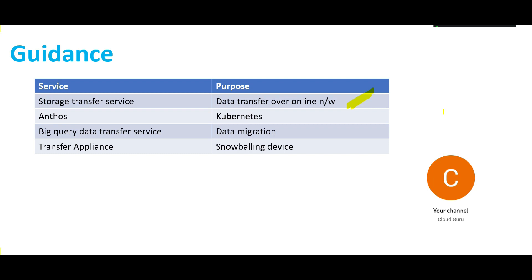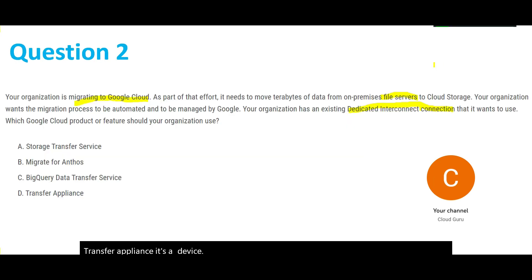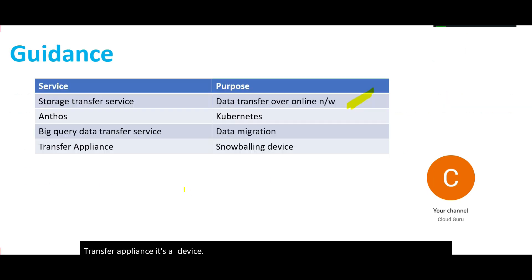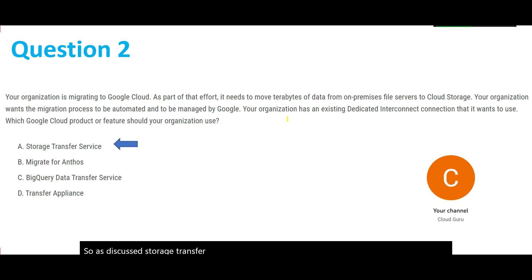The fourth option, Transfer Appliance, is a snowball-type device. However, the question clearly states there is an existing internet connection, so there is no need for a physical transfer device. This is also not one of the potential answers. As discussed, Storage Transfer Service is the answer.